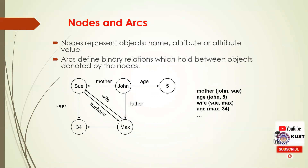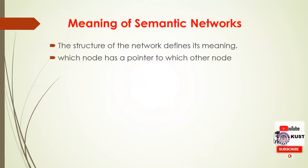Nodes in the semantic network represent objects — an object may be a named entity, an attribute, or any attribute value. The arcs are links that define binary relations which hold between objects denoted by the nodes. On the right, there is a propositional logic representation, in front of which is the equivalent semantic net, where nodes represent the objects and their links are the predicates from the propositional logic. The structure of the network defines its meaning — the meanings are merely which node has a pointer to which other node, and the network defines a set of binary relations on a set of nodes.